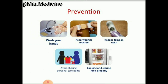Prevention includes washing your hands, keeping wounds covered, avoiding sharing personal care items, cooking and storing food properly, and reducing tampon risk. Menstrual tampons can cause toxic shock syndrome.